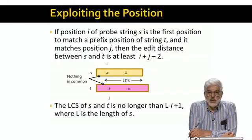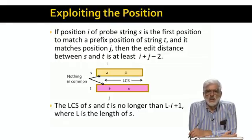These symbols may not be consecutive in T, but remember that there is a unique order to the symbols, and they appear in the same order in every string. So if S is of length L, then the longest possible LCS is of length L minus I plus 1.